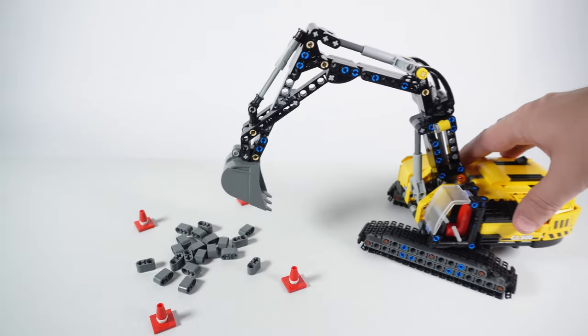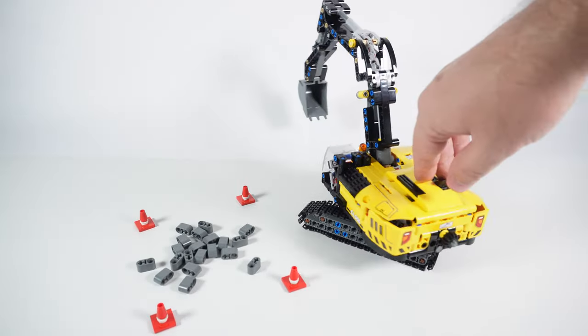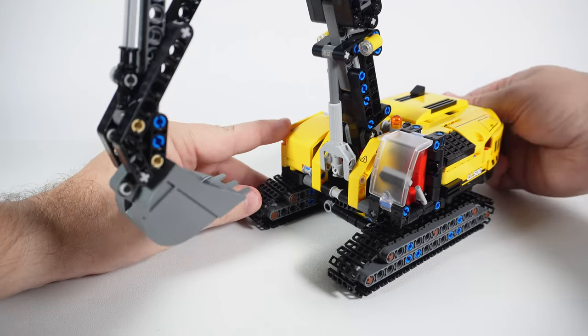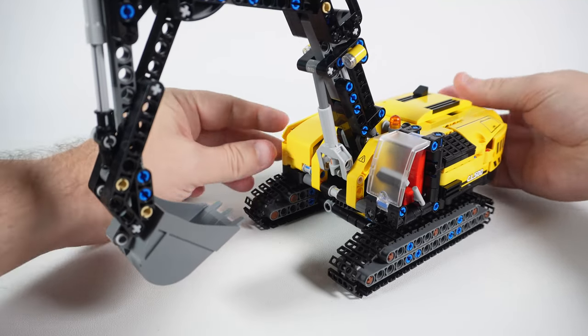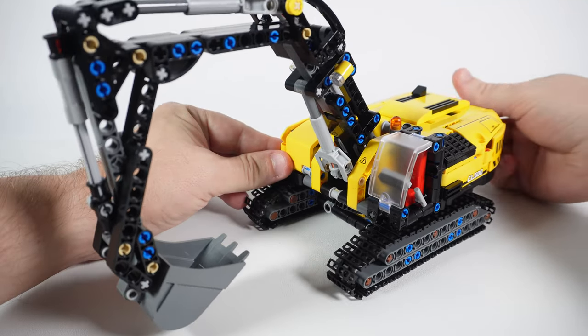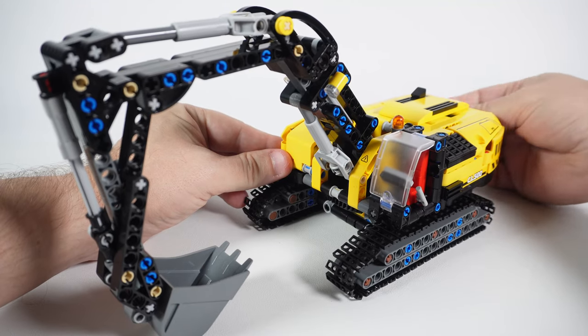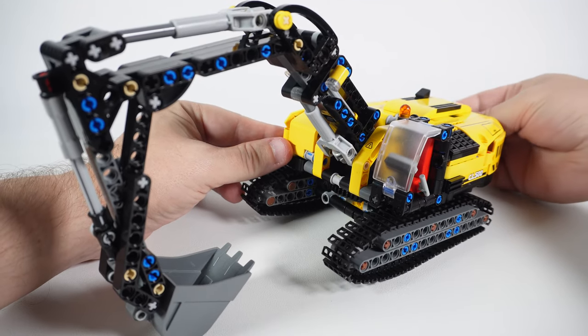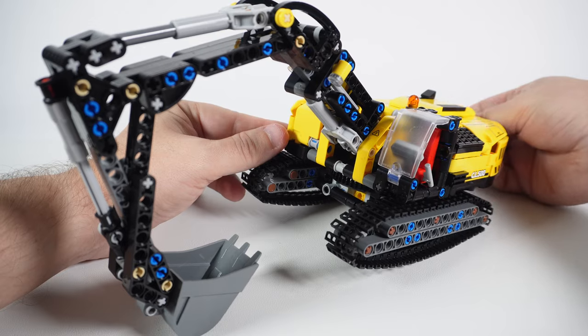The final result looks awesome. Now let's see how the boom, the arm, and the bucket work together. The boom cylinder is controlled by the knob on the back side of the body. The range of motion is good but it takes some time to lower the boom down from the topmost to the lowest possible position.